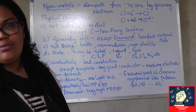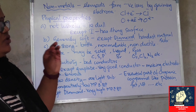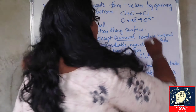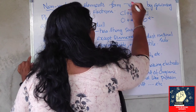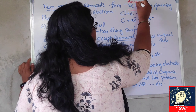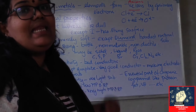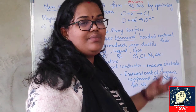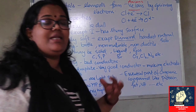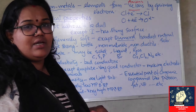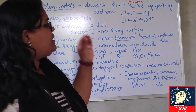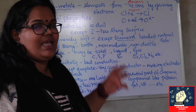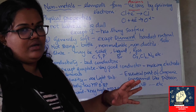What do you mean by nonmetals? Nonmetals are those elements which will form negative ions. What do you mean by negative ions? We call them anions — by gaining electrons. So when an atom gains electrons, it will acquire a negative charge and that atom becomes an anion.